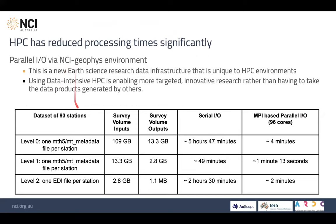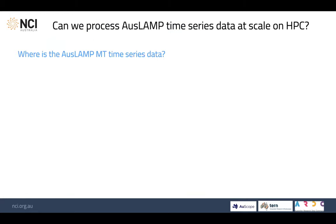We began bringing this data as part of an earlier project onto NCI. Once we put these massive data sets onto HPC and parallelised them, we were able to do processing in a matter of minutes. Whereas before just a few groups were producing massive data products, now researchers — given the infrastructure — can access that data and reprocess it for their actual use cases. That, to me, is about more targeted, innovative research rather than having to take products generated by others. When we went looking for the AuScope LAMP time series data, we found it was missing and undertook a massive rescue effort.